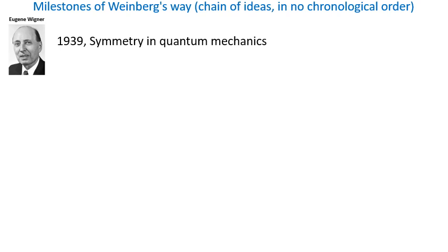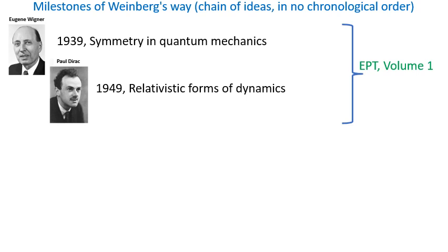This series of lectures is based on a three-volume book titled 'Elementary Particle Theory,' whose main message is that QFT can be reformulated as a theory of interacting particles. My understanding of Weinberg's way is broader than Weinberg's own contribution. I would like to start from the works of Eugene Wigner, who demonstrated that in quantum mechanics, space-time symmetries should be implemented by unitary representations of the Poincaré group.